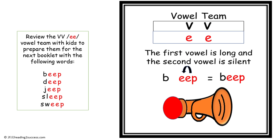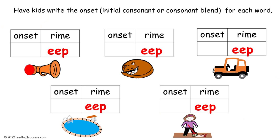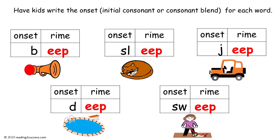This second long vowel E rhyme is also a vowel team — EE — and the words will be beep, deep, jeep, sleep, and sweep. This is a template for the booklet. As in the previous activities, have kids write the onset — the initial consonant or initial blend — for each word. This is the completed example. Note that there were two consonant blends: SL for 'sleep' and SW for 'sweep.'